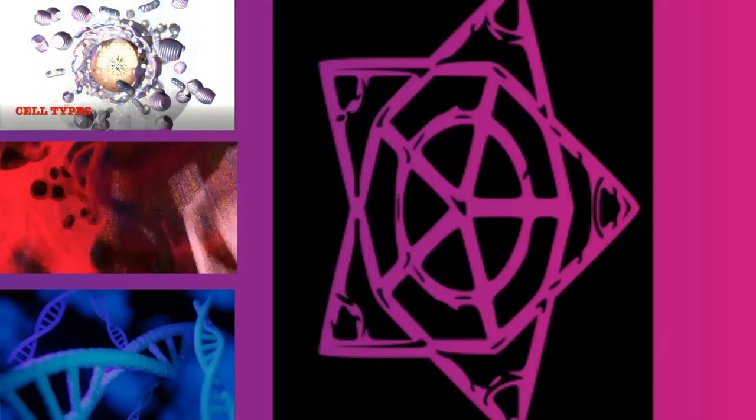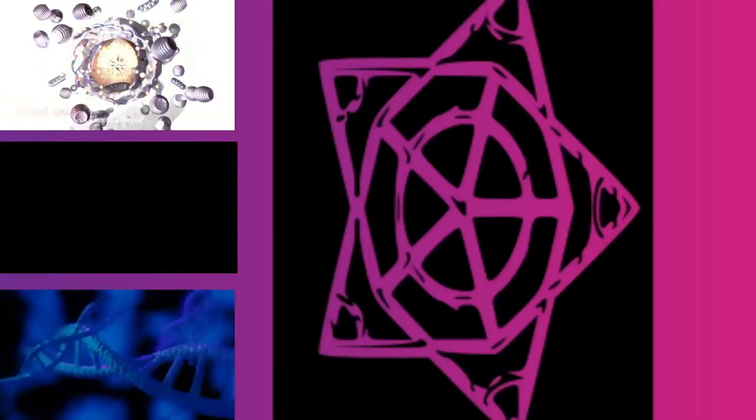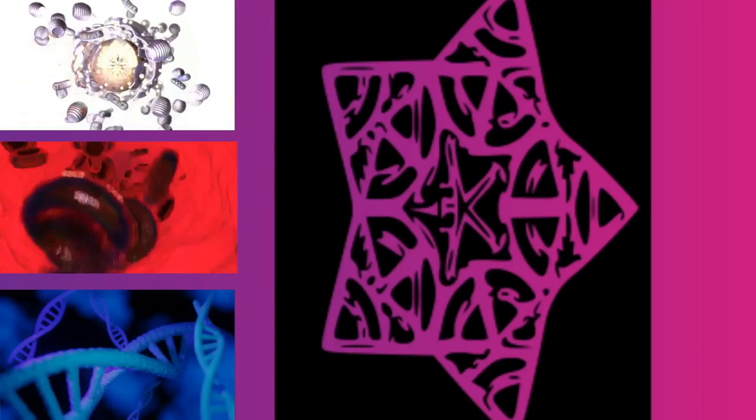Mitosis is complete. Each daughter nucleus has an identical set of chromosomes. Cell division may or may not occur at this time depending on the organism.